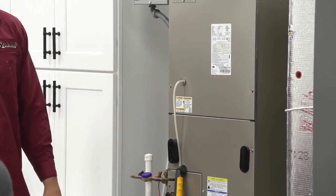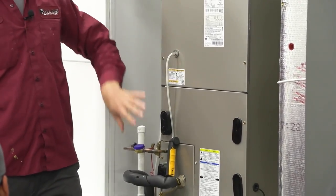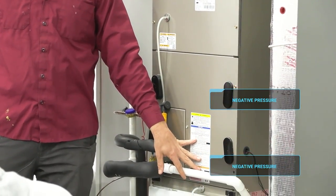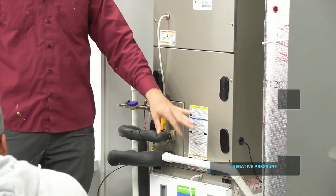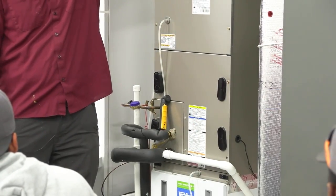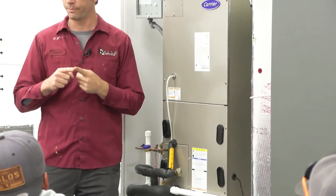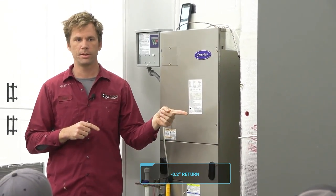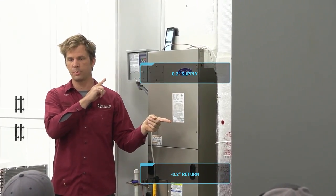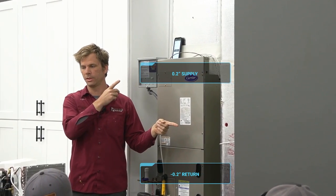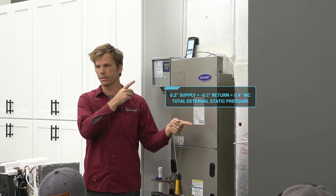The unusual thing here is that both these areas are negative pressure. Typically when we are doing our reading, we have our positive and negative, and we take those two numbers and add them. If we have -0.2 plus +0.2, what's our total external static? 0.4. It's 0.4, not zero.